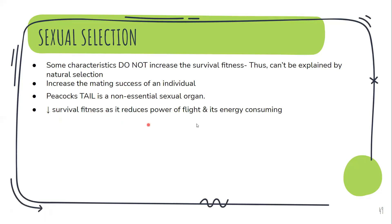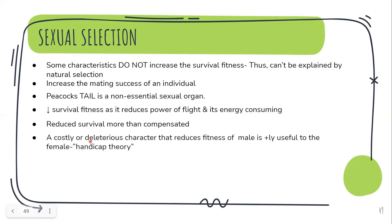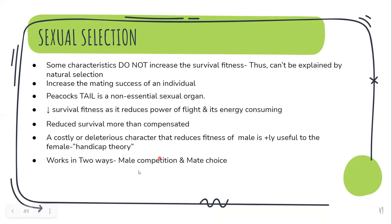The peacock's tail actually has a negative effect on fitness — it decreases survival by reducing flight ability and is very energy-consuming to grow. Yet this fitness-reducing trait is passed down through generations because the survival cost is more than compensated by the reproductive advantage it provides. The tail helps the male attract a female to mate with it. This is called the handicap theory.